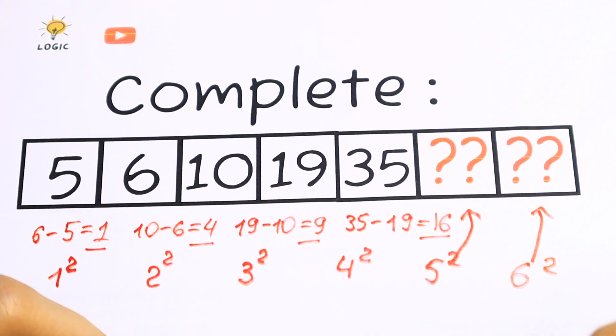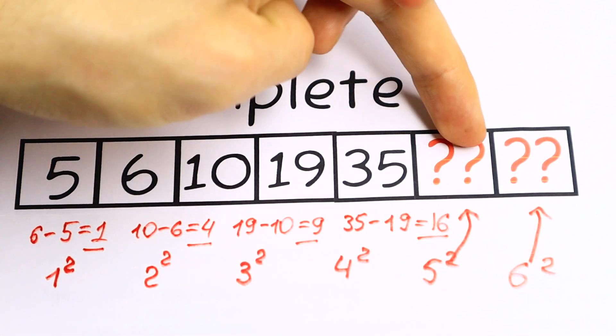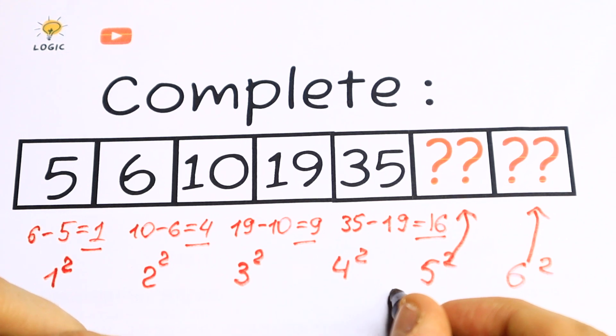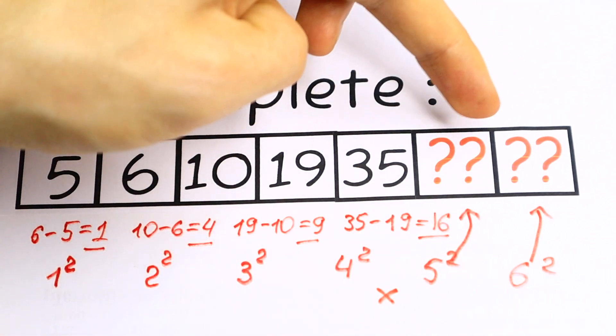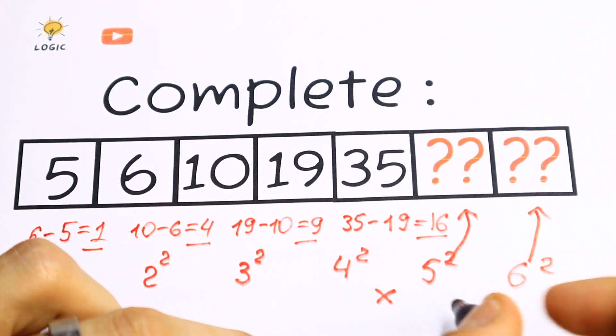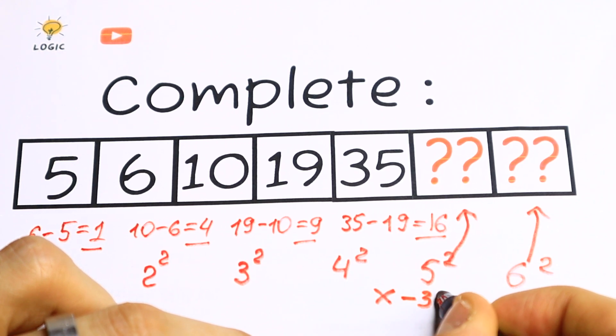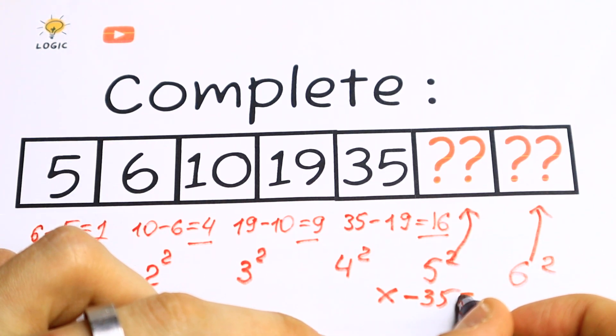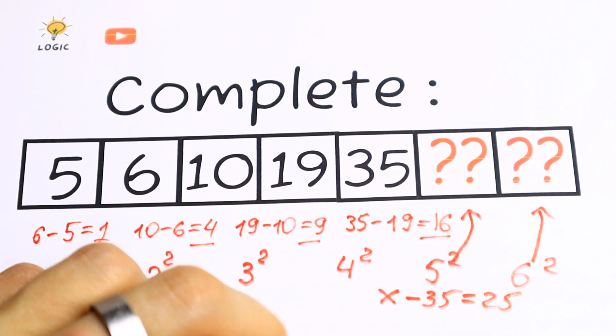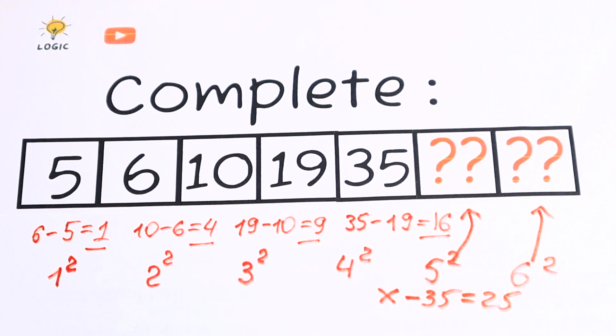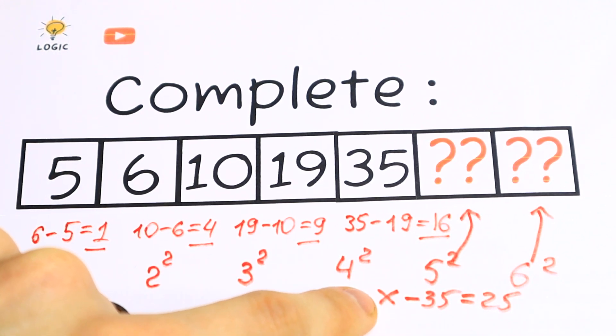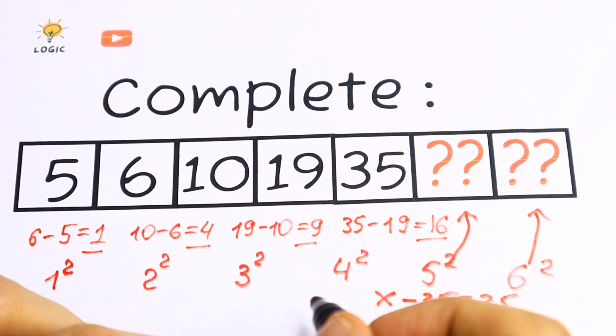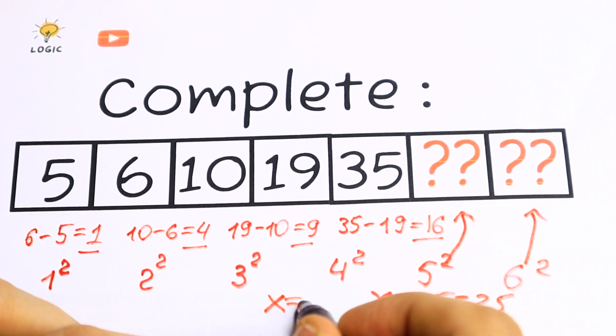So let's find this number. So this number we don't know. For example, it will be x minus the previous one, 35. And as a result, we need to have 5 square, which is equal to 25. And it's not hard to see that our x will be equal to 60. Because 60 minus 35 will be 25. So our x equal to 60. But x is our first number.